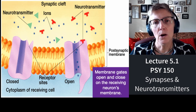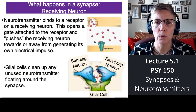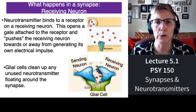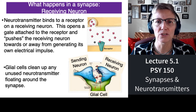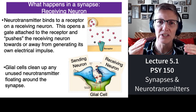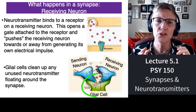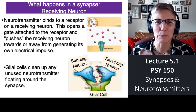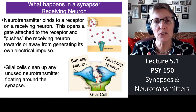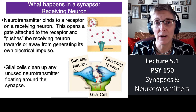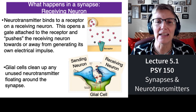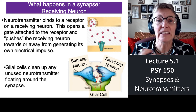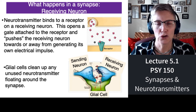Glial cells serve lots of different purposes. In the drawing on this slide, the sending and receiving neurons are both shown in blue, and underneath them is a green-colored glial cell. That glial cell hangs around the synapse because it captures any unused neurotransmitter — so the neurotransmitter doesn't float around there forever. The glial cells sort of pick up all the leftover trash, if you will.